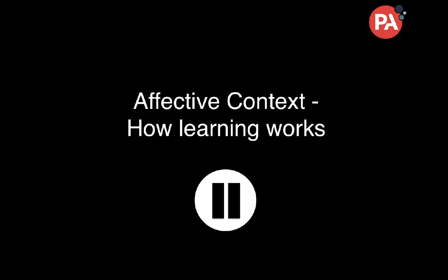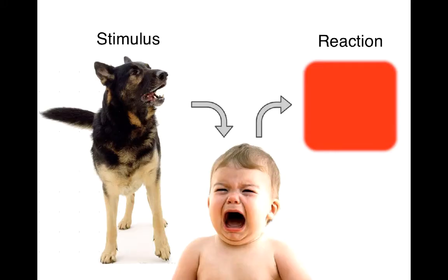So how do you design learning? You've got to start by answering the question: how does learning work? If you don't know how it works, you really can't design it. Here's how it works — effective context. You start off as a child and you have kind of gross reactions to the things in the world around you.